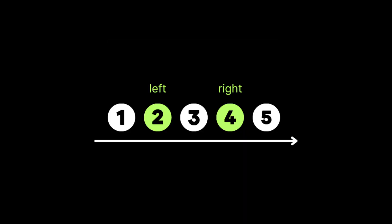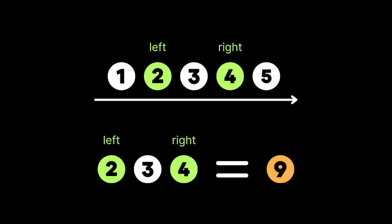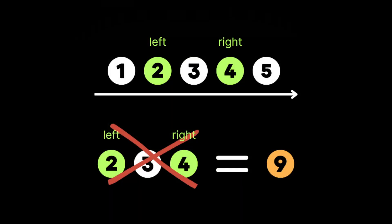Let's imagine we have a bunch of numbers in a line, one after the other. The task is to find the total sum of all the numbers between two points, left and right. For example, if we want to find the sum between the second number (2) and the fourth number (4), the total would be 2 + 3 + 4 = 9. The problem looks easy, but the tricky part is that